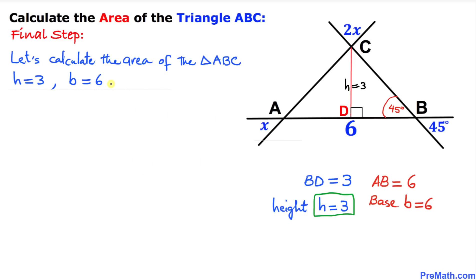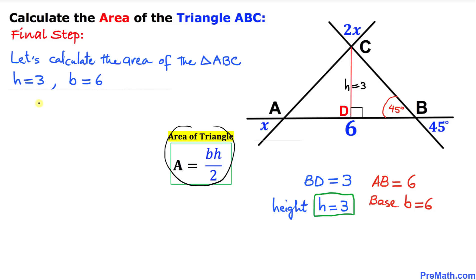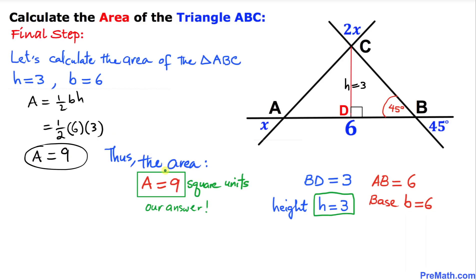Here's our final step: let's calculate the area of triangle ABC. We know the height is 3 units and the base is 6 units. Using the area formula: A equals one-half times base times height, so A equals one-half times 6 times 3. That gives us 9. So the area of this triangle turns out to be 9 square units, and that is our final answer. Thanks for watching — please don't forget to subscribe to my channel for more exciting videos.